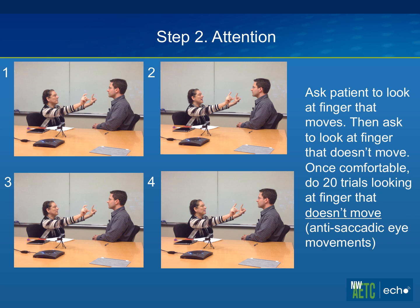Now what I want you to do is look at the opposite finger — when you see a finger moving, you're going to look at the finger that isn't moving, and then look back at my nose. Brian, you missed a few there. You have to do 20 trials. Once they're comfortable looking at the finger that doesn't move, do 20 trials. If it's three or fewer errors, you get six points; more than five errors brings it down — four, three, two — and more than six errors is zero points.